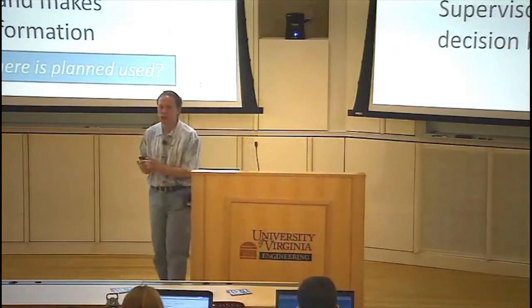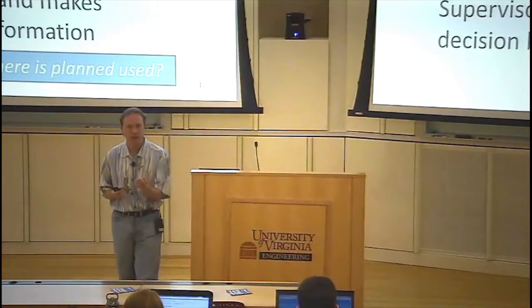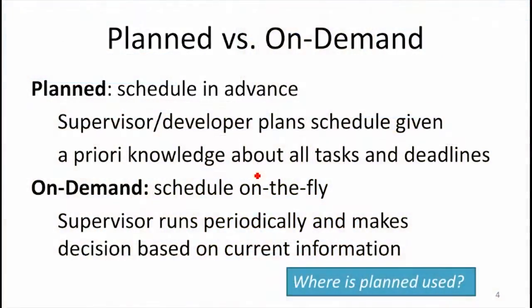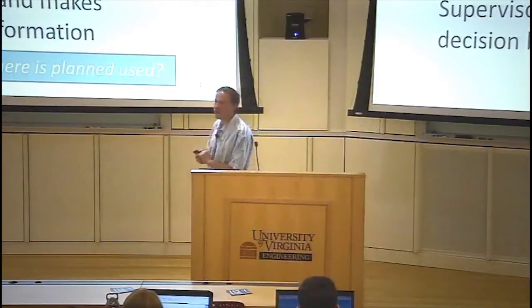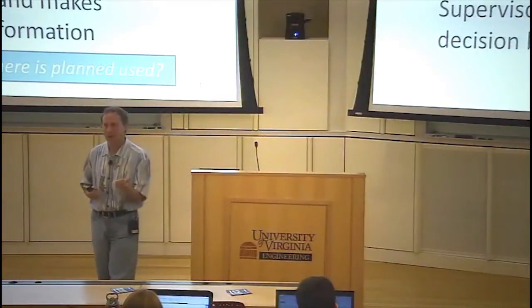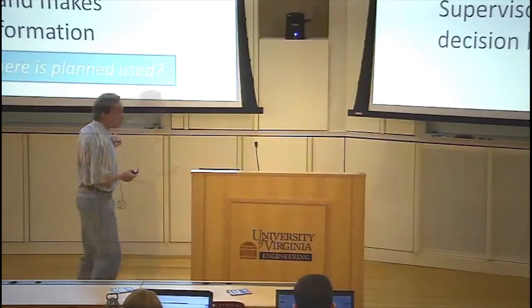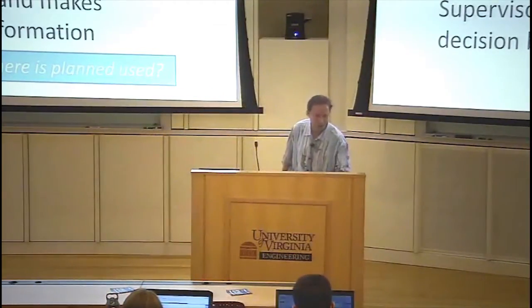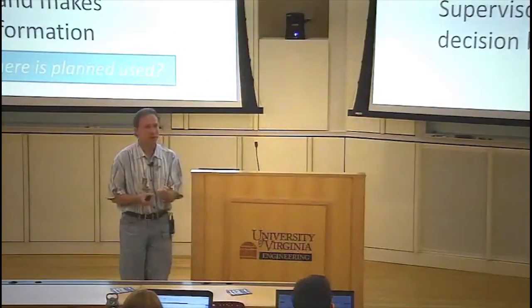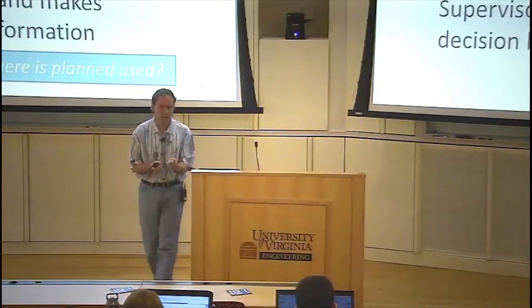We can think of scheduling in two different contexts. One is where you know all the tasks you need to execute at the beginning, so you can plan a schedule in advance. If the supervisor knows all the processes that have to run, how long they're going to take, and when they need to finish by, you could figure out a schedule in advance that gives you the best properties in terms of resource use and meeting all those deadlines. If you don't know in advance — and most of the scheduling we've been talking about falls into this category — the scheduler is making decisions on the fly. Every time you get a timer interrupt, the scheduler decides which process runs next based on everything it knows at that particular time.